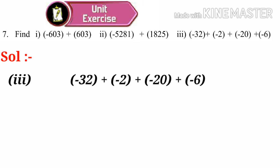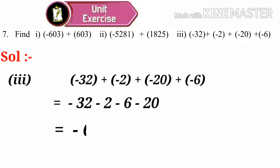Number 3: minus 32 plus (minus 32) plus (minus 2) plus (minus 20) plus (minus 6). The sum of these negative integers: minus 32 and minus 2 becomes minus 34; minus 34 and minus 6 becomes minus 40; minus 40 and minus 20 becomes minus 60.